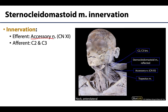The accessory nerve will only provide motor innervation to the sternocleidomastoid muscle. The SCM will get its afferent fibers from the cervical spinal nerves C2 and C3. The fact that there are two separate types of nerves innervating this muscle is unique in terms of muscle innervation.